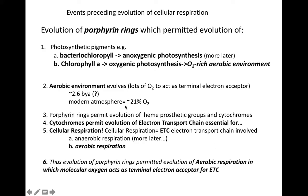Currently our modern atmosphere has about 21% molecular oxygen. Furthermore, porphyrin rings permitted the evolution of cytochromes, which are essential parts of electron transport chains and essential for cellular respiration. The porphyrin rings thus permitted evolution of the electron transport chain, which initially enabled anaerobic respiration and then eventually aerobic respiration.